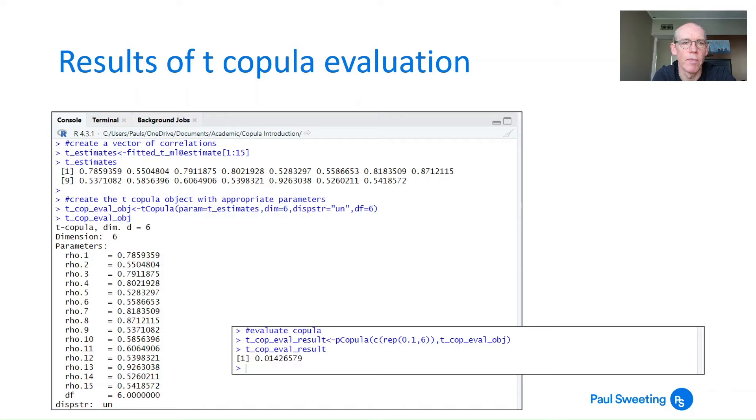Here's what the results look like. First we have the t_estimates showing just the 15 correlations. Below that, the t copula evaluation object with d equals 6 for degrees of freedom, across 6 dimensions, with the correlations from t_estimates and unstructured dispersion. Evaluating the copula gives us the joint probability of all six series in the lowest 10% of the distribution: 0.0142. That's how easy it is.